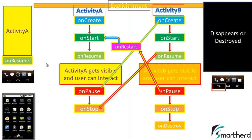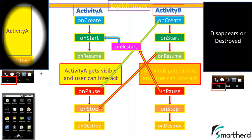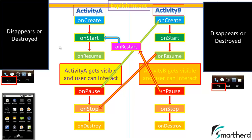Now, if the user gets bored with the application and does not want to continue, he presses the back button. As soon as he presses back, onPause is executed again, then onStop, and then finally onDestroy is executed. The application ends and Activity A disappears. Both activities come to an end — and this covers the full Android Activity Lifecycle.